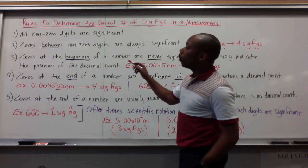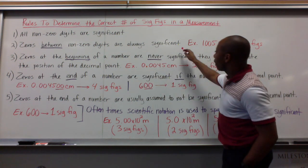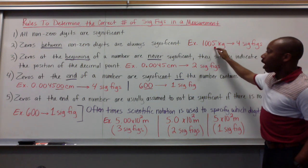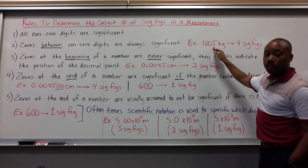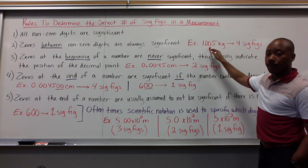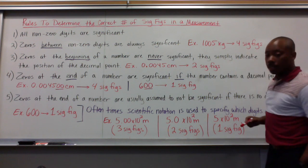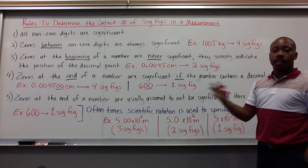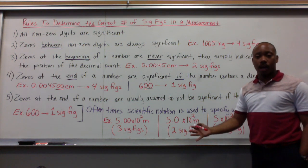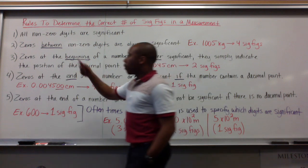Two, zeros between non-zero digits are always significant. For example, I have 1,005 here. I have two zeros between two non-zero digits, making these zeros significant. So I have 1, 2, 3, 4 significant figures. Notice I have my units here because I never just have a naked number. That number always comes with units here in science class.